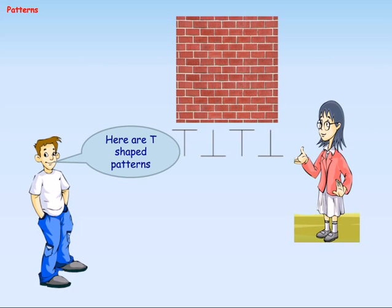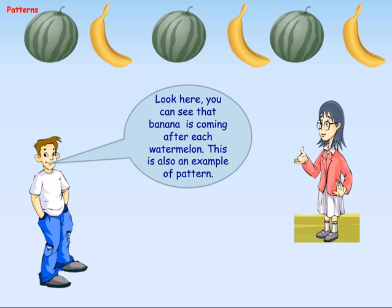Here are T shaped patterns. Look here, you can see banana is coming after each watermelon. This is also an example of pattern.